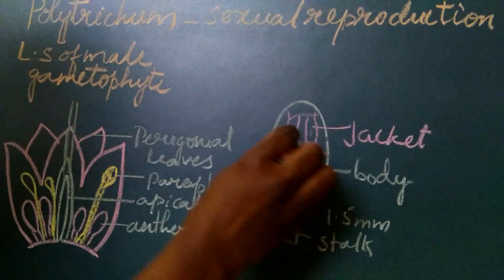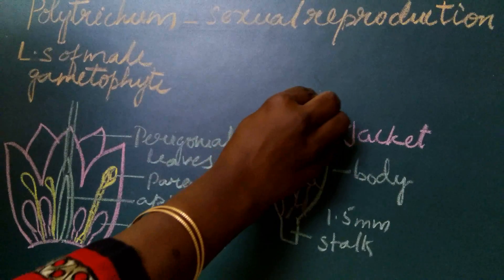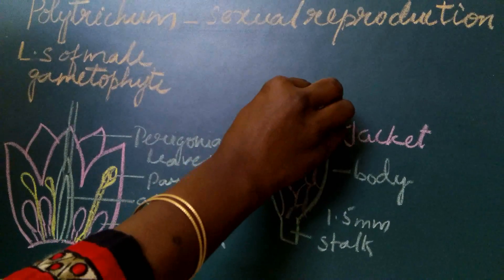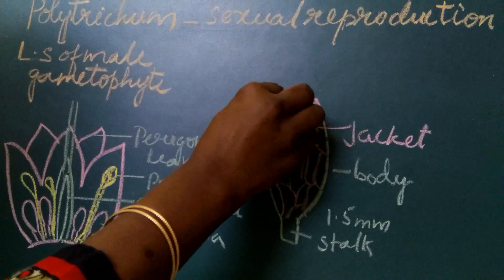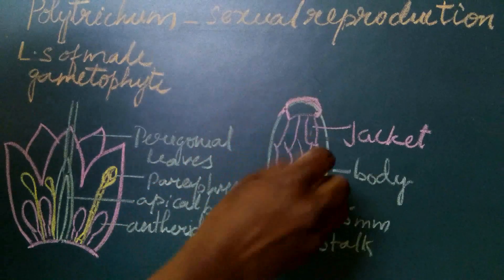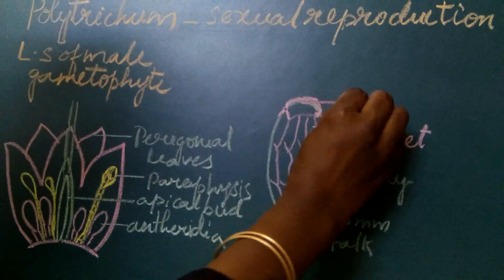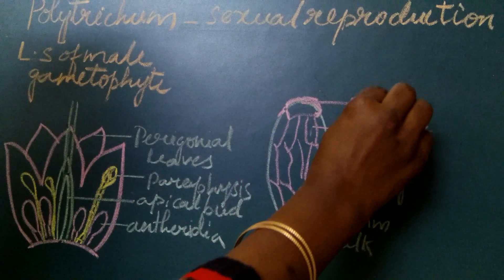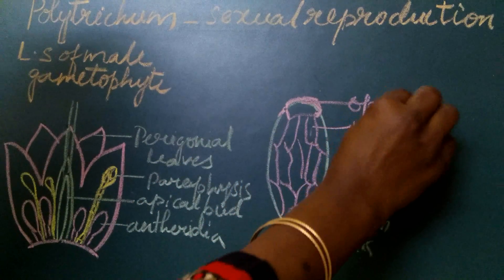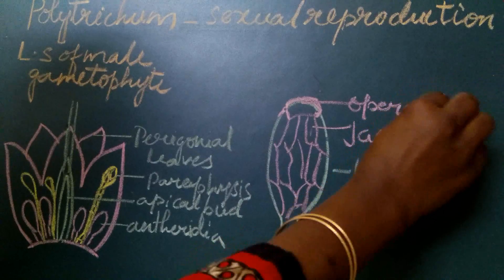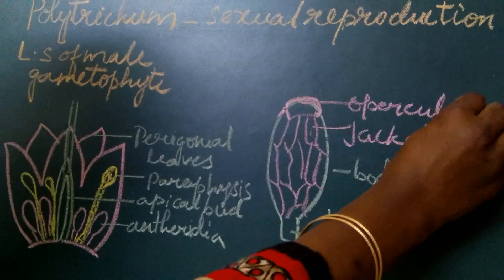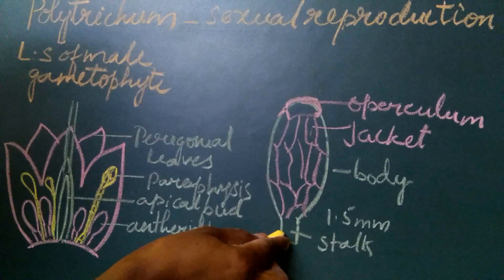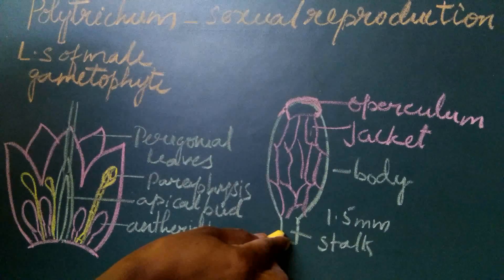The apical region of the antheridium has one large cell which is called the operculum.